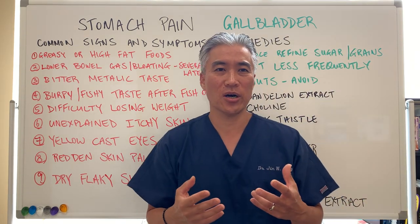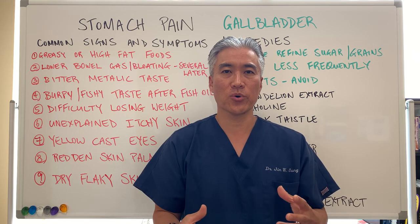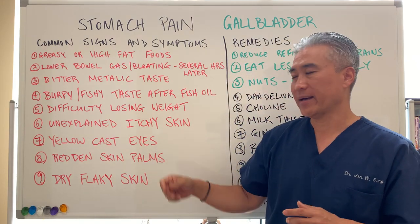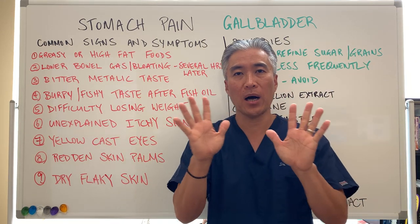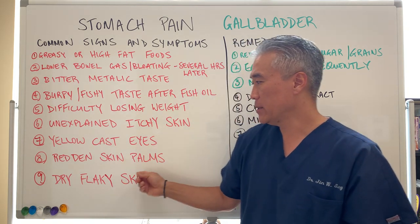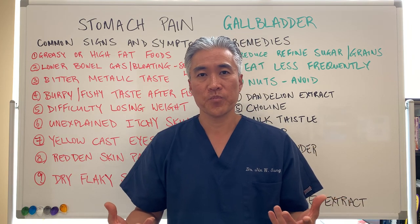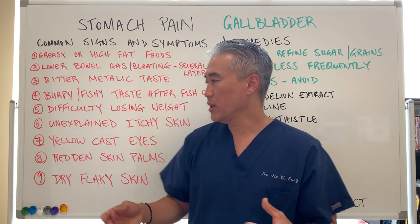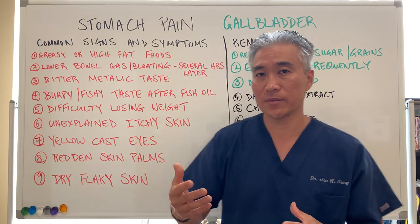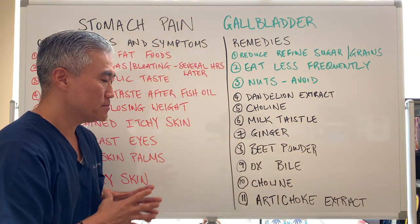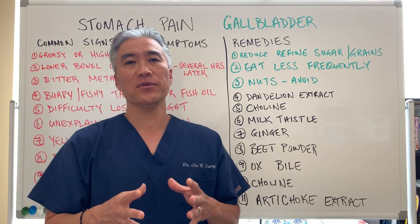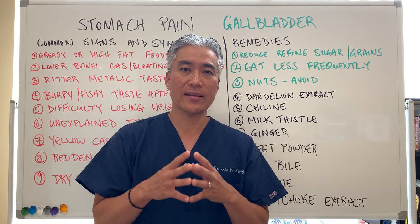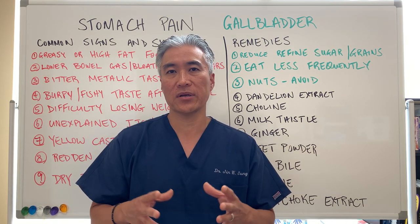Yellow cast eyes — jaundice — means your skin and the whites of your eyes become more yellowish. You can also have reddening of your palms and the bottom of your feet, as well as dry, flaky skin. These are the clinical signs and symptoms before the condition becomes really big and problematic. Obviously jaundice is a more advanced problem.